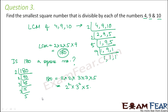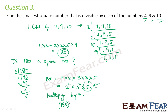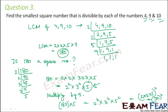To get the nearest perfect square, we multiply by 5, because 5 is the extra factor causing it not to be a perfect square. We also need the number to remain divisible by 4, 9 and 10, so we multiply 180 by 5. This gives 180 into 5 equals 2 square into 3 square into 5 square, which equals 2 into 3 into 5 whole squared, that is 30 squared, which equals 900. Therefore 900 is the smallest square number that is divisible by 4, 9 and 10.